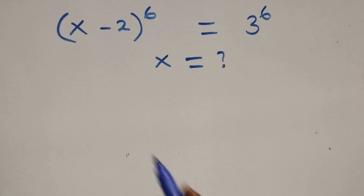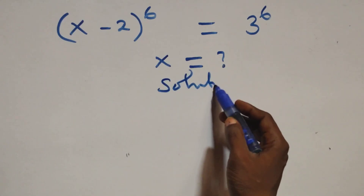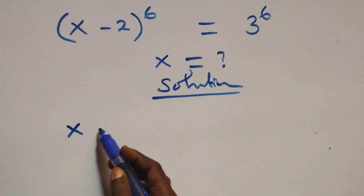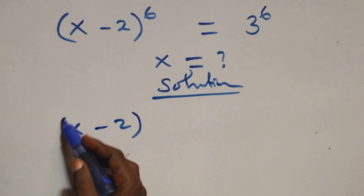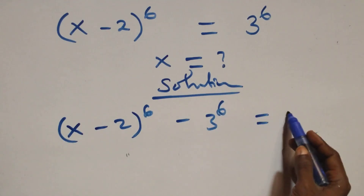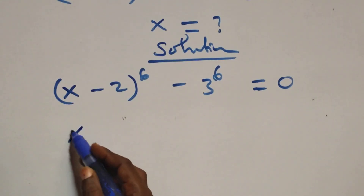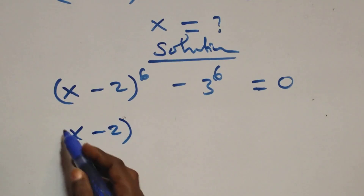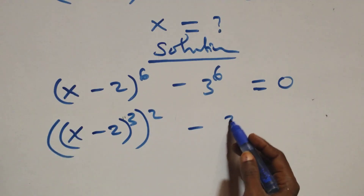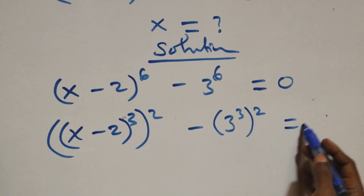Hello, you are welcome. How to solve this nice exponential equation — solution from here. From what we have here, we take 3 raised to power 6 to the left hand side, and this becomes x minus 2 all raised to power 6 minus 3 raised to power 6 equals 0. We can write this as x minus 2 all raised to power 3, then all raised to power 2, minus 3 raised to power 3 all raised to power 2, equals 0.